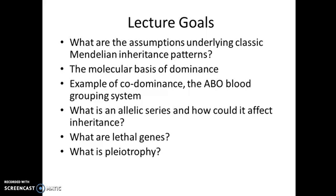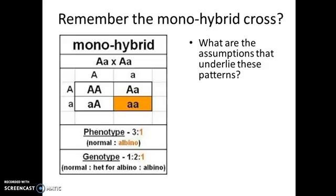The lecture goals are shown here — please read through them in your own time. Let's talk about the assumptions that underlie classical Mendelian inheritance patterns. Shown here is a monohybrid cross. There are some assumptions that underlie these patterns — biological realities that have to hold true in order to see phenotype ratios of 3 to 1, which reflects an underlying genotype ratio of 1 to 2 to 1.